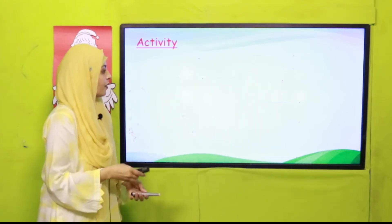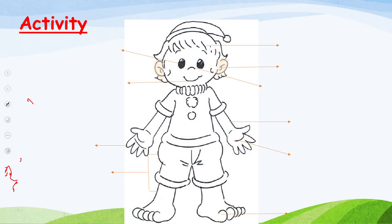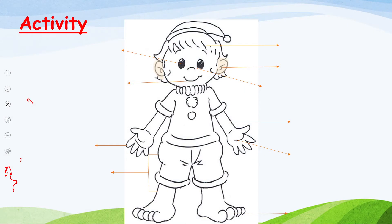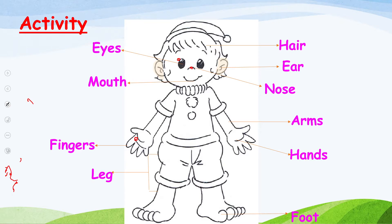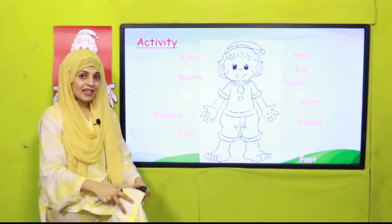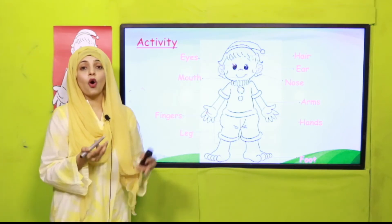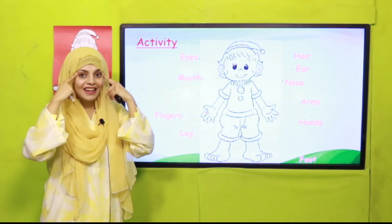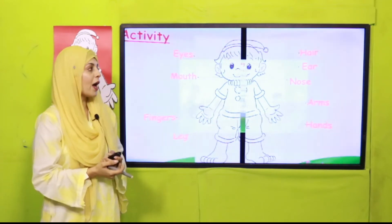Now it is a complete body! This is how you complete your body parts, and now I can show you this on the big screen. The activity doesn't end here — you have to name different body parts. Can you name a few? For example, what is this? What is this? You have to name them. These are the different names of your body parts: hair, ear, nose, arms, hands, fingers, mouth, eyes, legs, and foot. Touch your body parts — where is your nose? Where are your eyes? These are called your body parts.